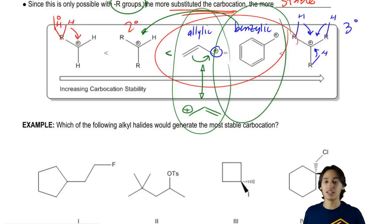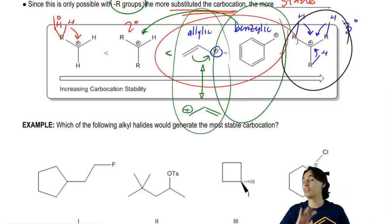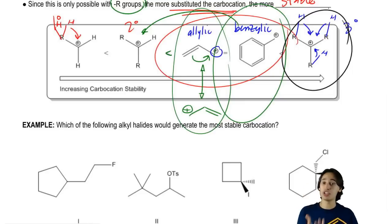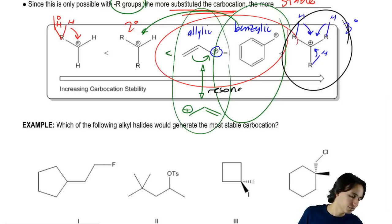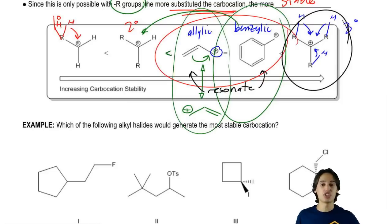But the only thing is that tertiary is actually always going to be the best. Even if it can't resonate, that's fine because the tertiary one has so much hyperconjugation that it's actually going to be more stable overall than even the benzylic or the allylic ones that can resonate. So these can resonate, but tertiary is just the most stable overall.